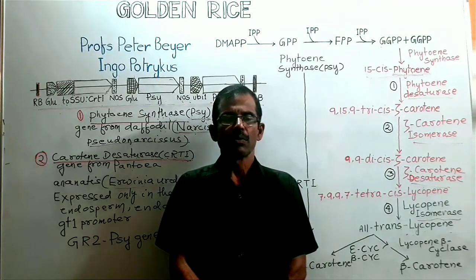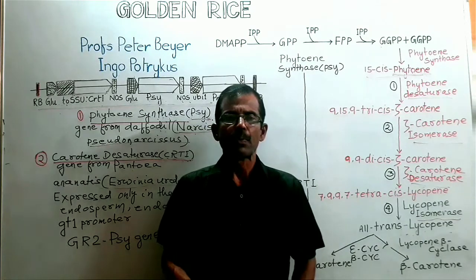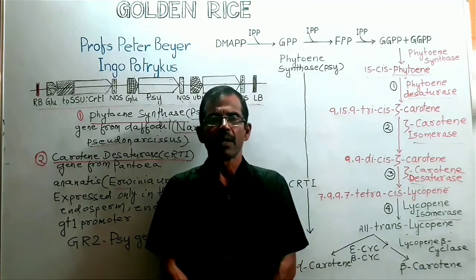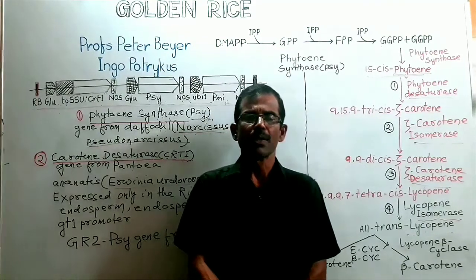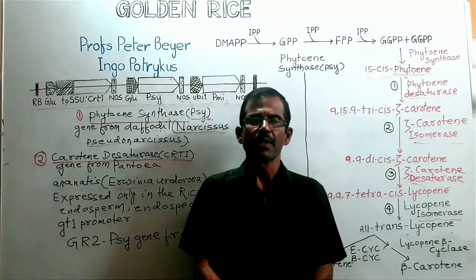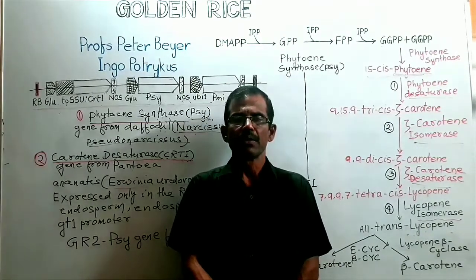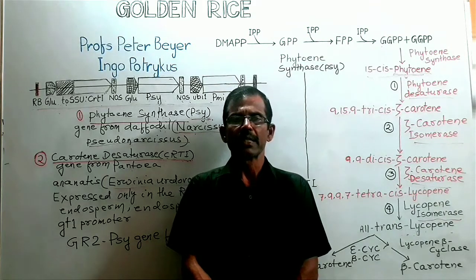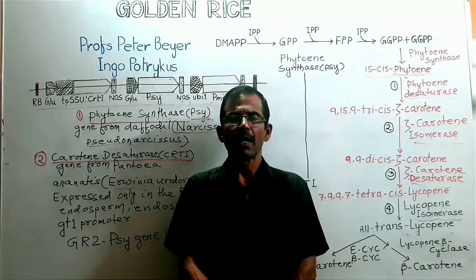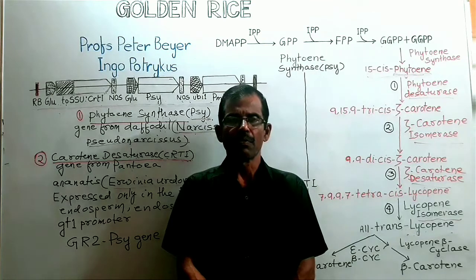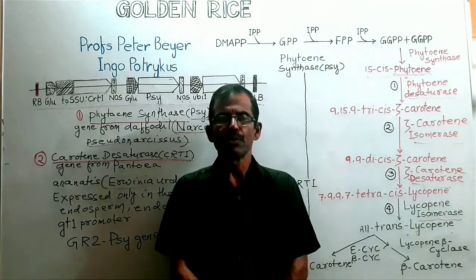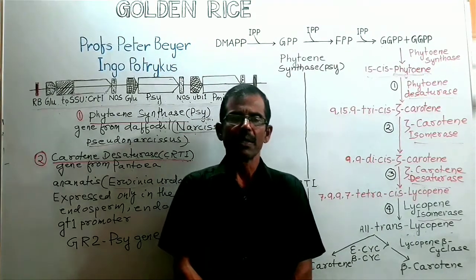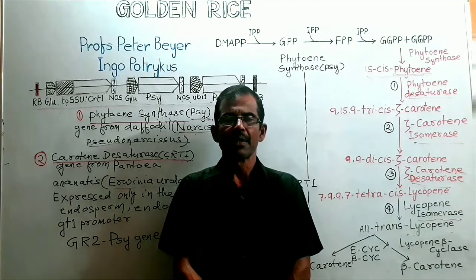Golden rice technology is based on the simple principle that rice plant causes the whole machinery to synthesize beta-carotene. While this machinery is fully active in the leaves, a part of it are turned off in the grain. Due to this, beta-carotene is not synthesized in rice grain.